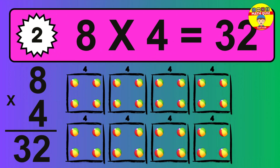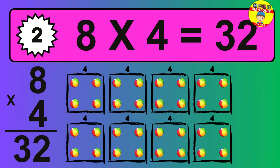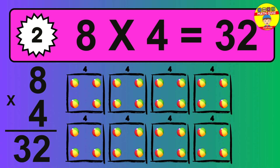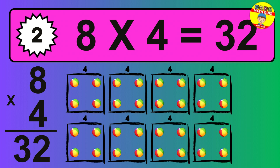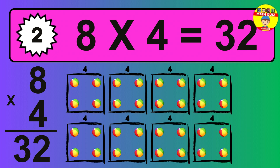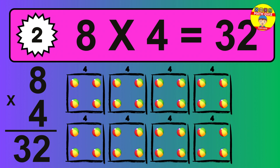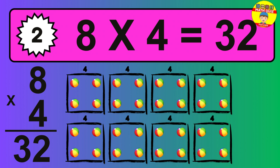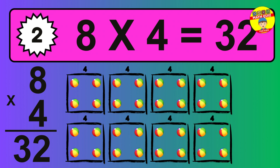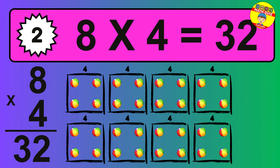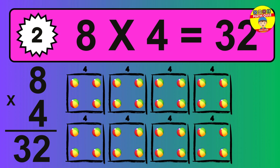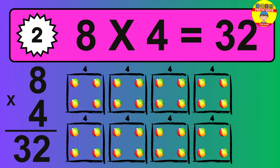The answer is 8 times 4 is 32. To calculate, we have 8 groups with 4 balls each one. So how many balls do we have? 32 balls.